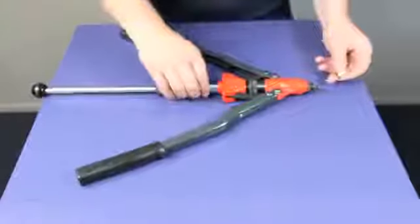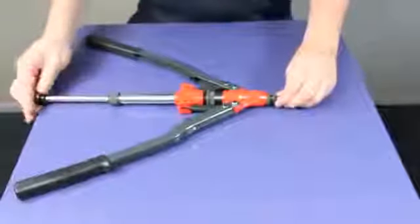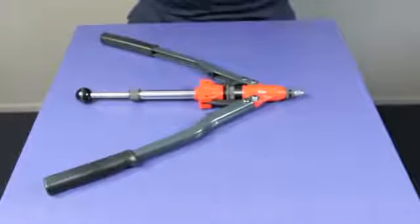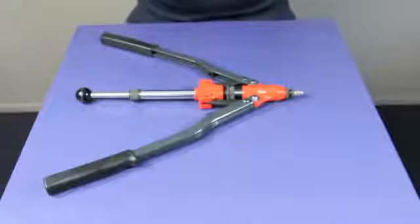Adjust the nose piece so the unthreaded tip of the mandrel protrudes from the end of the blind nut rivet. Test at least one rivet before inserting into the post.